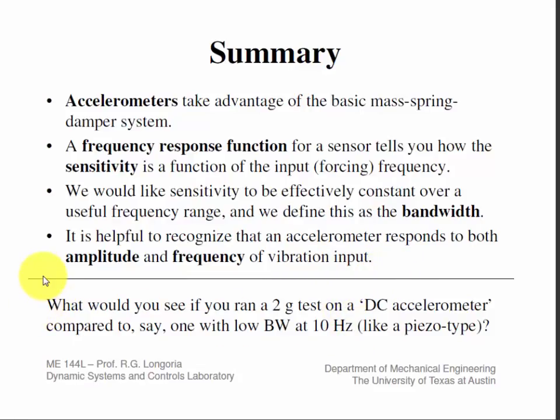One last quiz for you: What would you see if you had two accelerometers—a DC accelerometer like the one we have that can read constant gravity, and one with a low bandwidth at 10 hertz like a piezo type that can't read DC? If you were doing a 2G test, would you be able to tell the difference between them? One will have an output that changes when you do a 2G test. What would the output look like for a piezo type if you excited it by 2G at a DC level? That's something to think about.